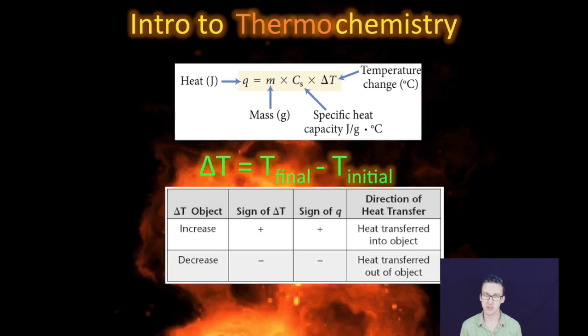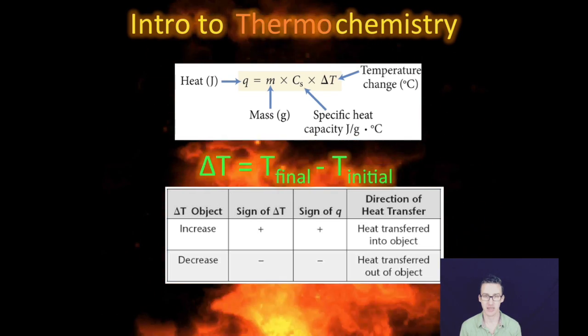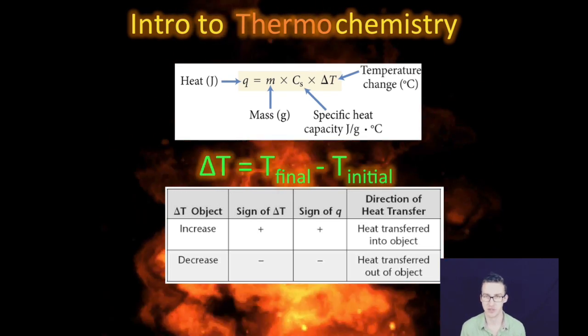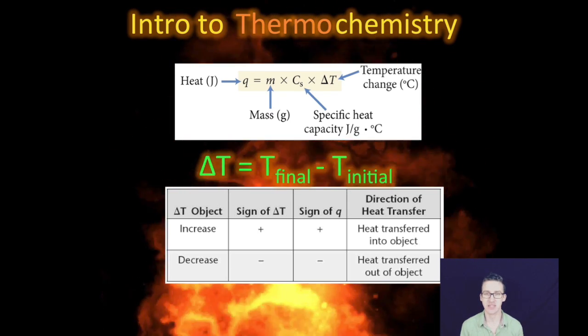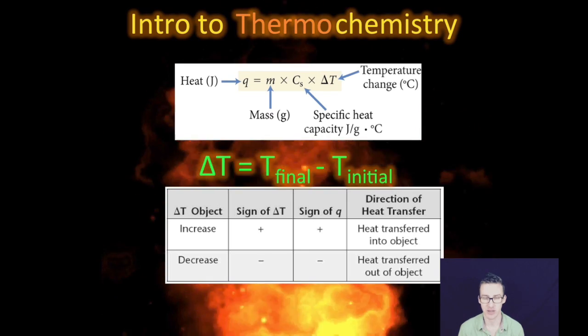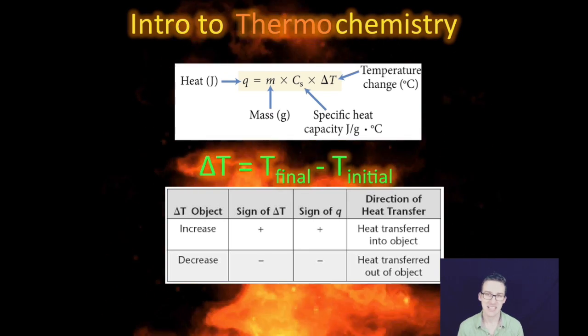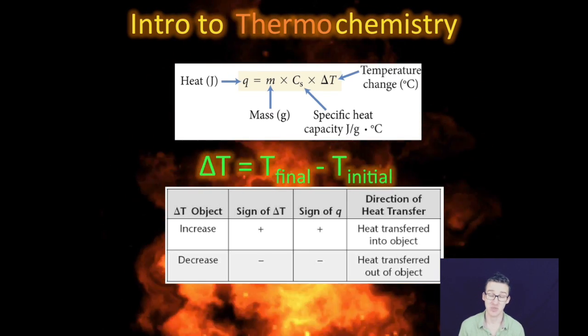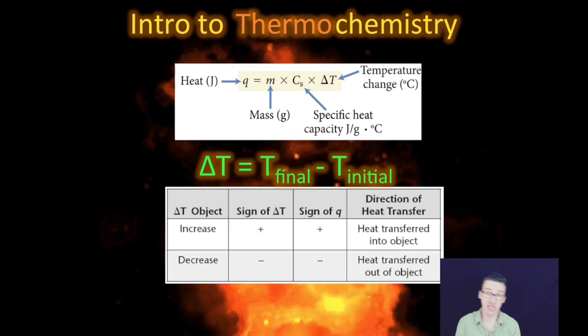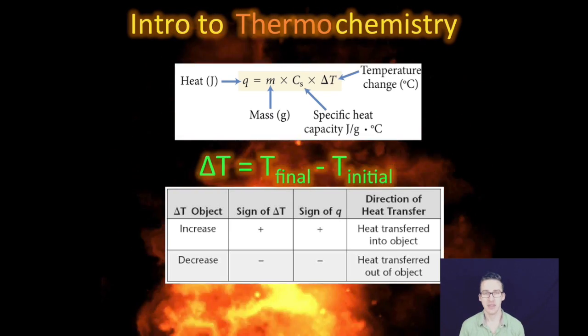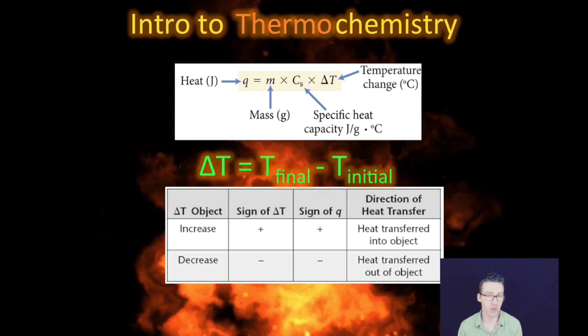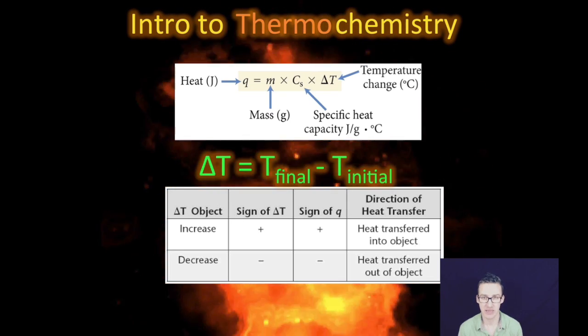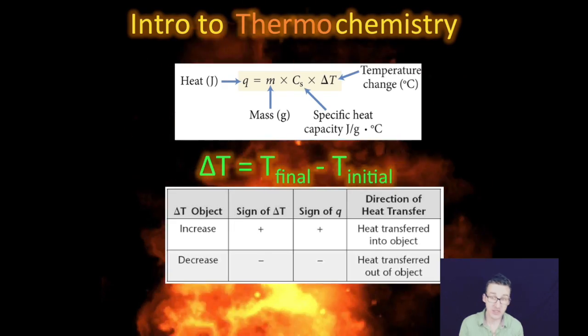However, you also have situations where the final temperature is less than the initial temperature, and you'll have a negative sign for your q, which simply means that heat has been transferred out of the object. But regardless, keep in mind that the sign is just telling us whether heat has been transferred into or out of the object. You can't have a negative amount of heat—it's just describing the directionality of the heat transfer: into or out of.